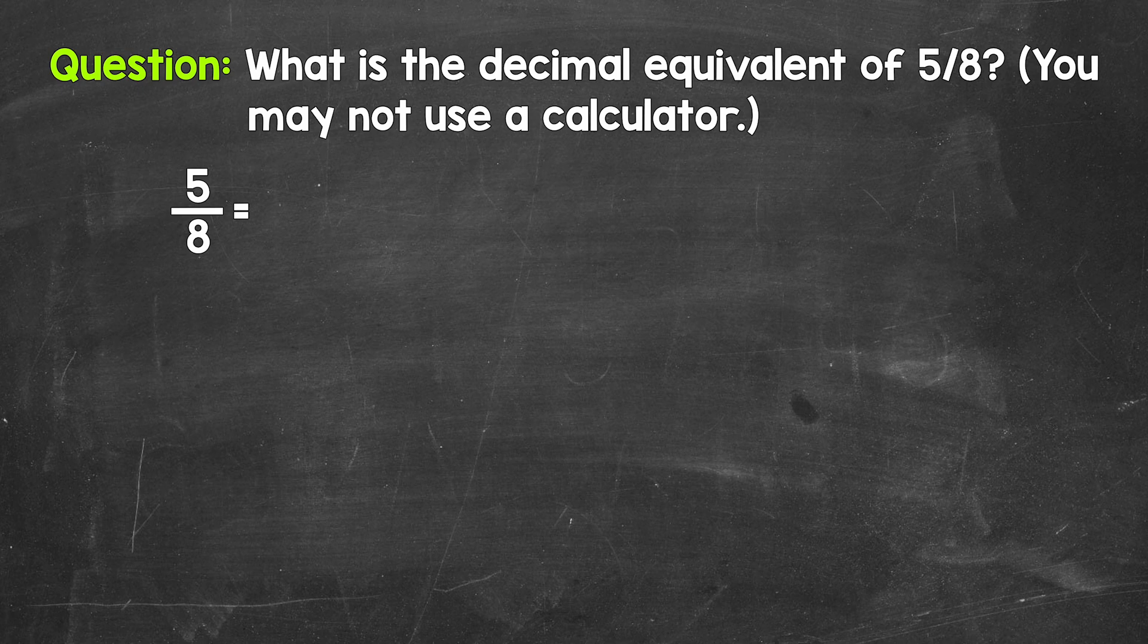When we convert a fraction to a decimal, we can do this by dividing the numerator, the top number of the fraction, by the denominator, the bottom number of the fraction. So for 5 eighths, we can set this up as five divided by eight.